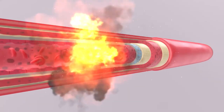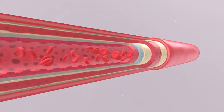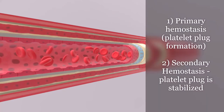When a blood vessel gets damaged, it gets repaired in two steps: primary hemostasis and secondary hemostasis. Primary hemostasis, also known as platelet plug formation, is the first step.